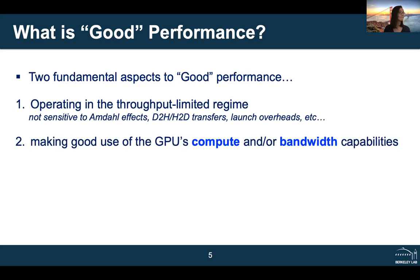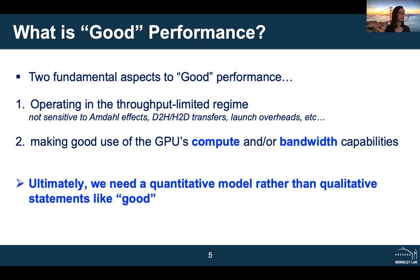The second aspect of good performance is making good use of the GPU's compute and/or bandwidth capabilities. A GPU has tens of teraflops of compute and roughly a terabyte per second of bandwidth. You want to make sure you're using one or both of those to their fullest extent. Ultimately, we need a quantitative model — not just qualitative statements like 'it's kind of good,' but being able to say we're getting 90% of our theoretical limit or 80% of our GPU's compute or bandwidth capability.